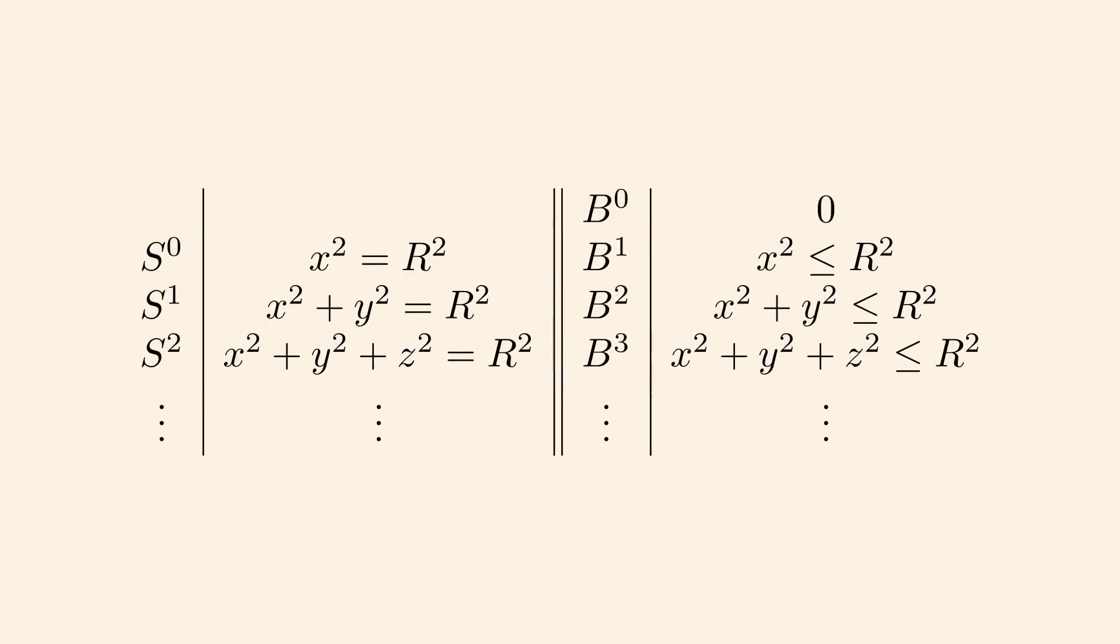These are the equations that all points on the n-spheres and balls satisfy. With that out of the way, we can take a look at the volume and surface area of these balls and spheres. They are dependent on the radius r, and we write Bn for the volume of the n-ball and Sn for the surface area of the n-sphere. You already know some values of these.